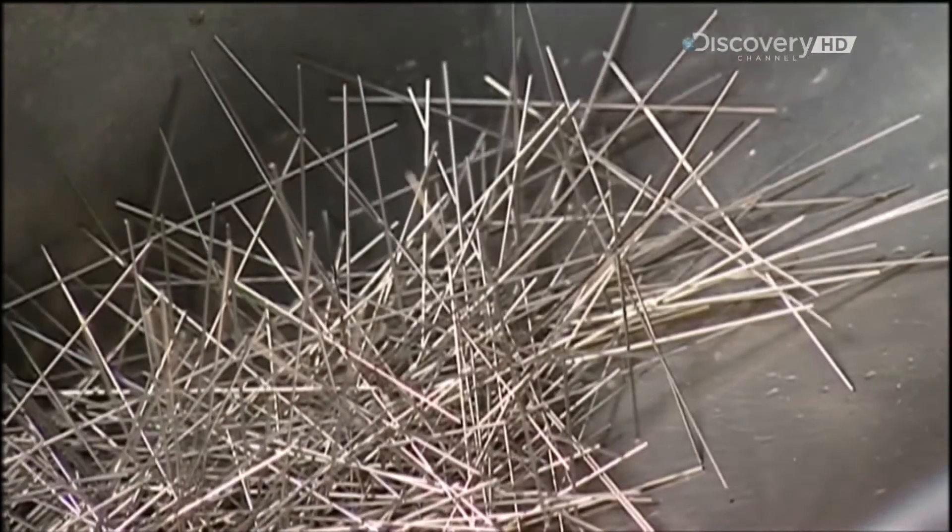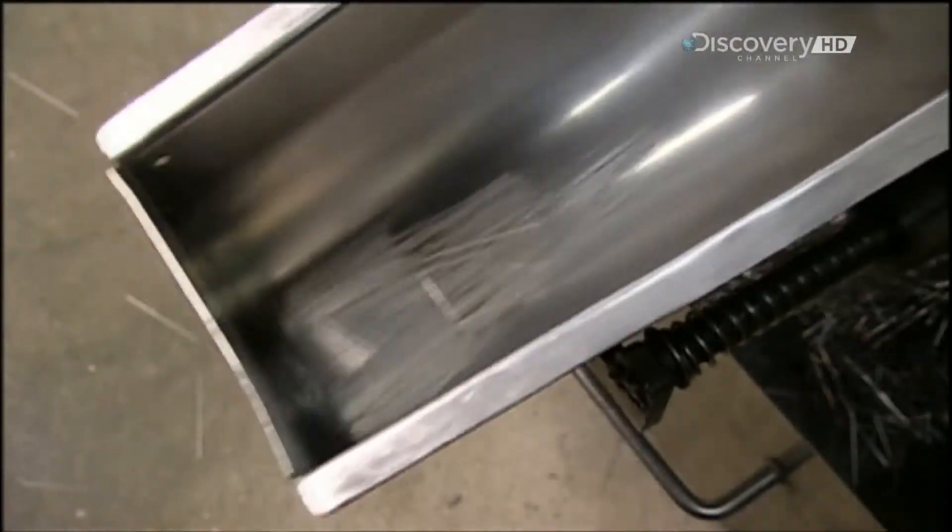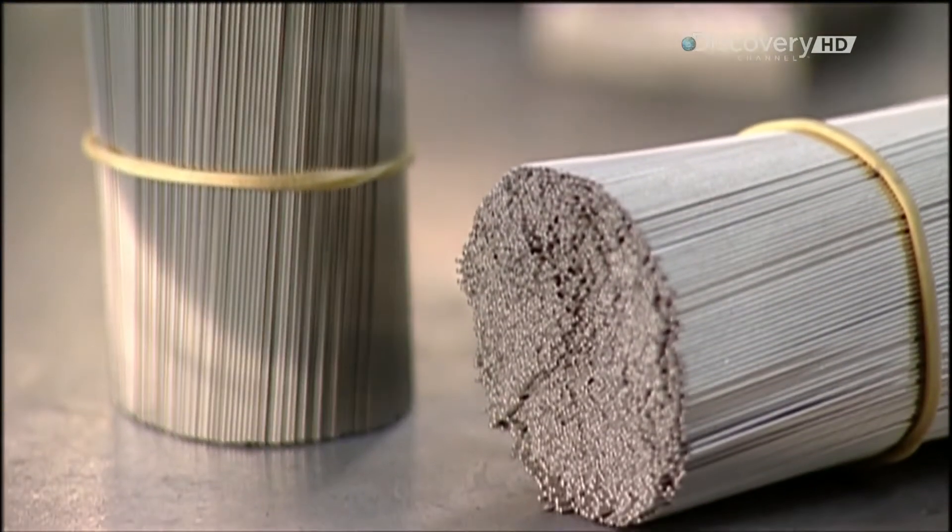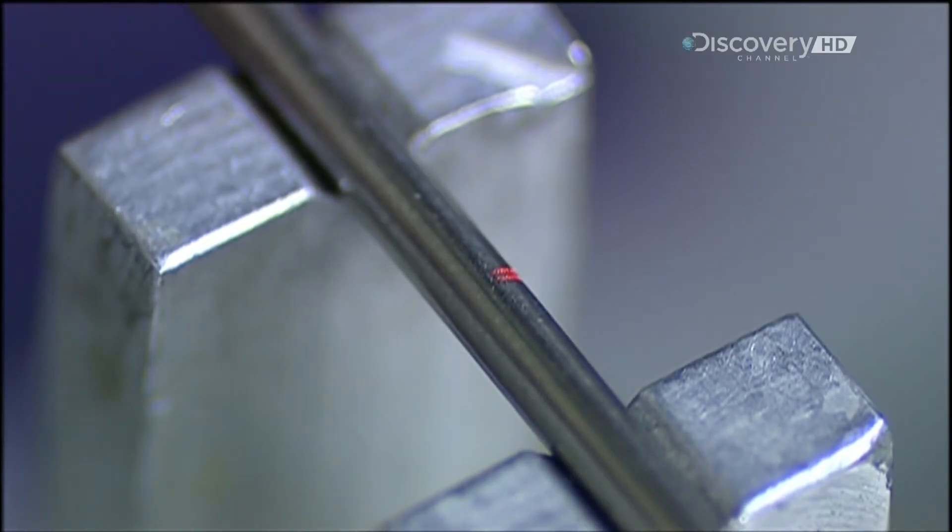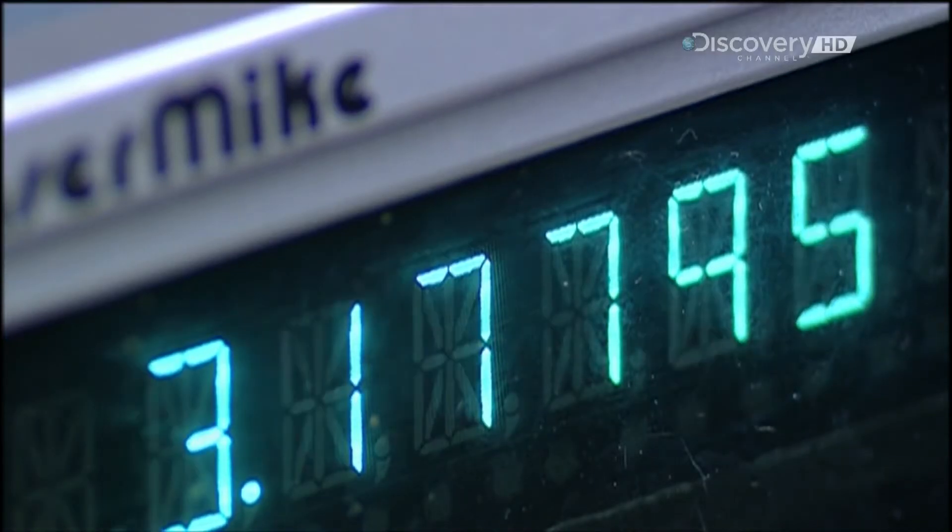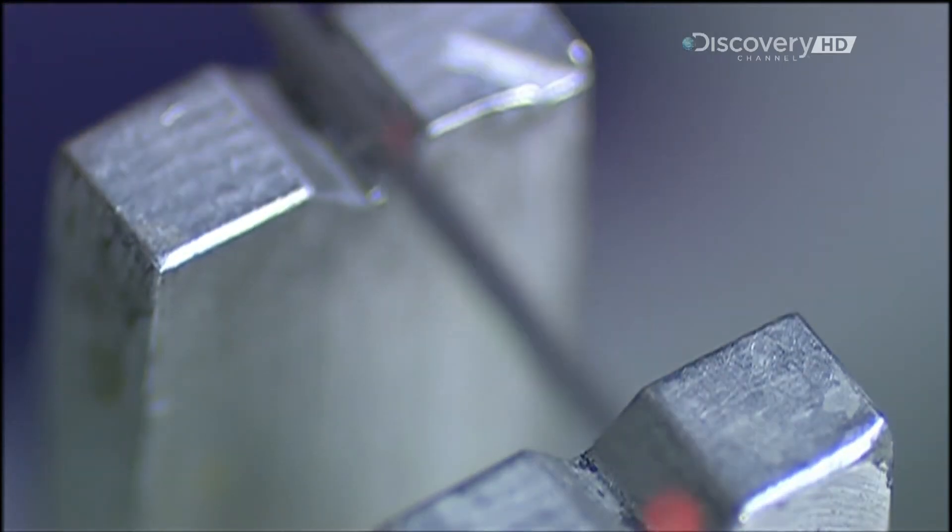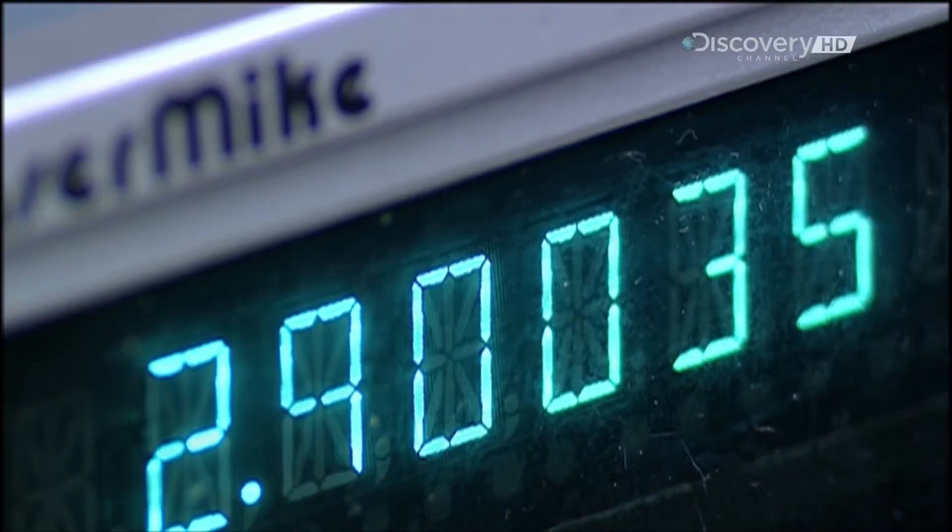The tubes fall into a bin, a tangled mess. The bin, driven by air pressure, agitates, and this shaking motion straightens them out. An operator bundles them together with elastic bands, but removes a few for checking. This micrometer uses laser light to measure the outside diameter. The tube is supposed to be two millimetres thick. And it's spot on.